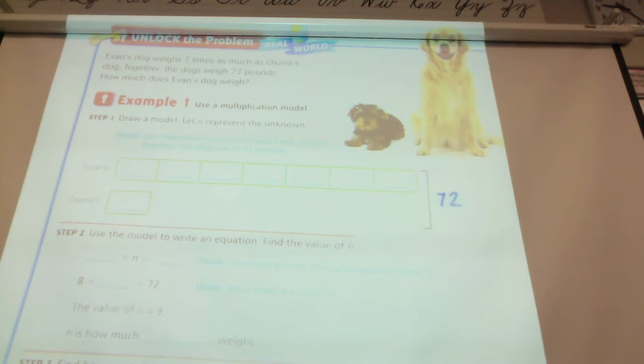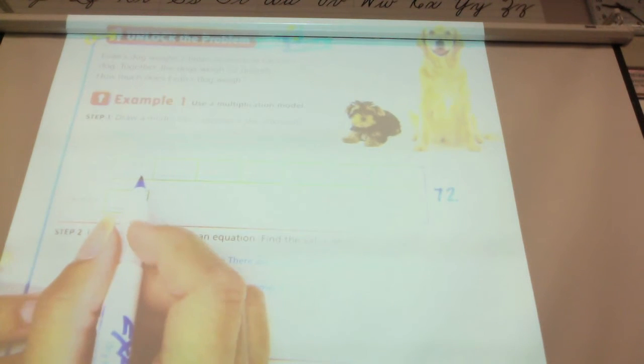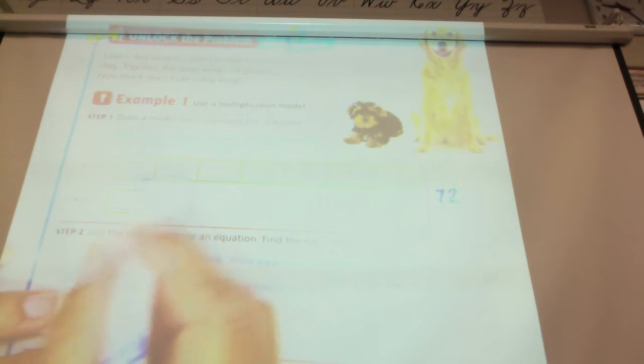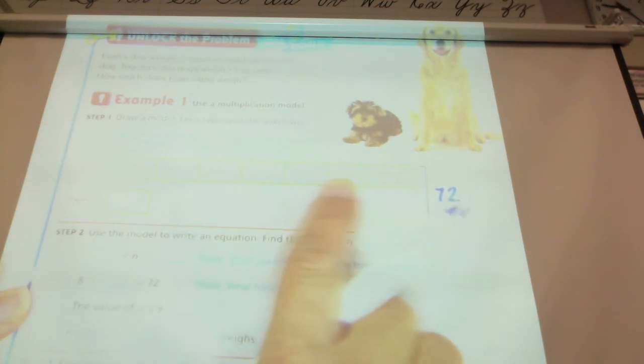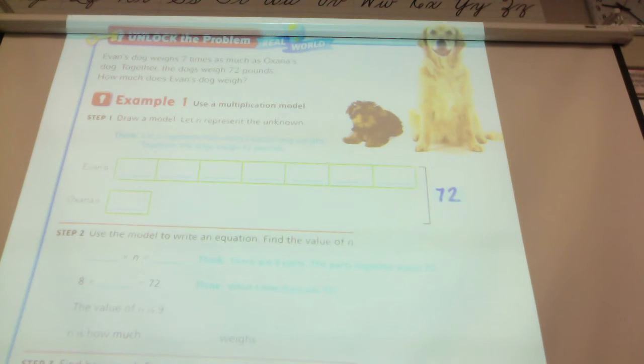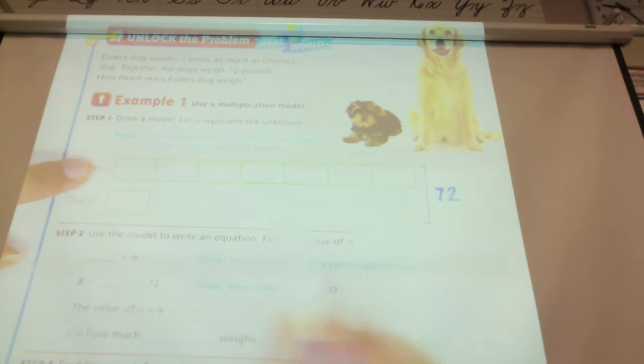Evan's dog is 7 times as much and so we know that he's a bigger dog, right? We know that Evan's dog weighs 7 times as much as Xana's. So, we're going to have Xana's represented by 1 box and then we're going to have Evan's dog represented by 7 boxes because it's 7 times as many.